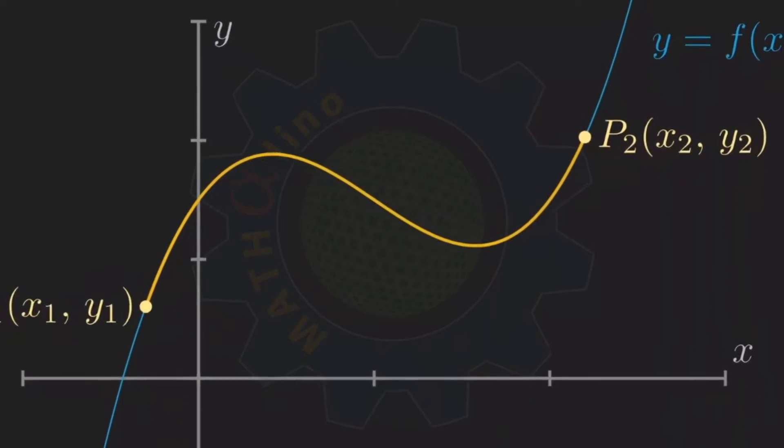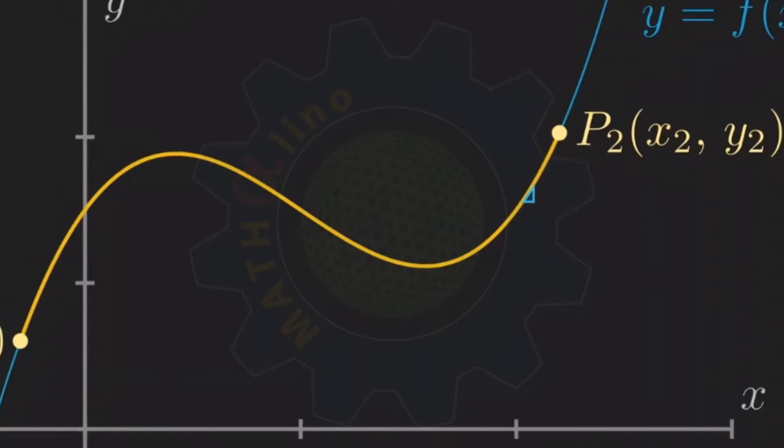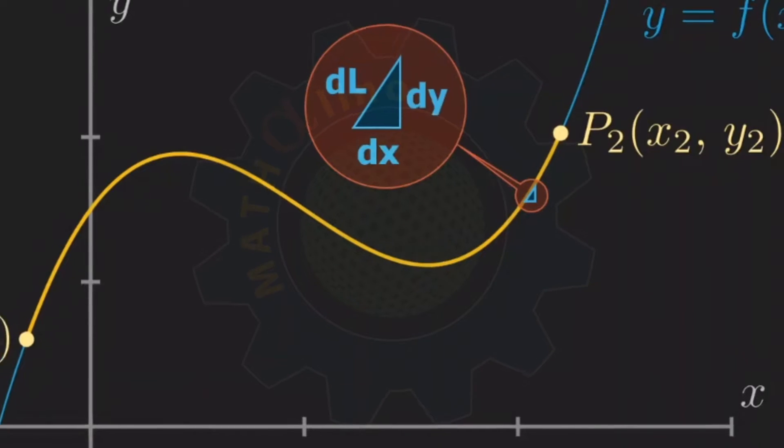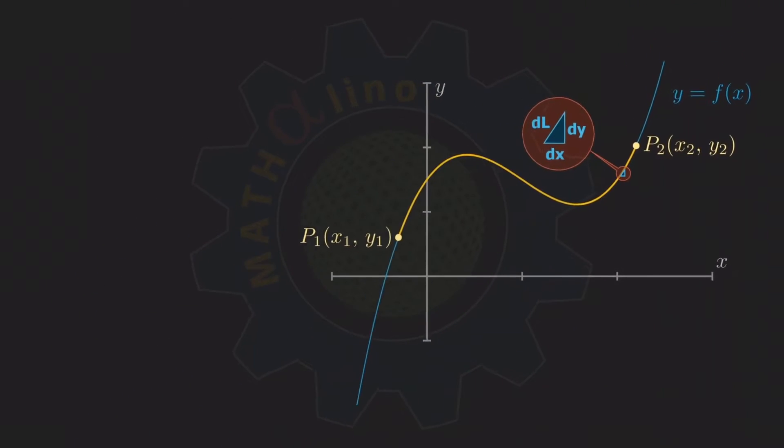Let us take a differential element in our graph in the form of a right triangle. The hypotenuse of this triangle is the differential length of arc dL. And let us call the legs of this triangle as dx and dy. We can then apply Pythagorean theorem to this right triangle. dL squared is equal to dx squared plus dy squared.